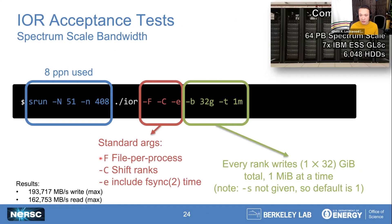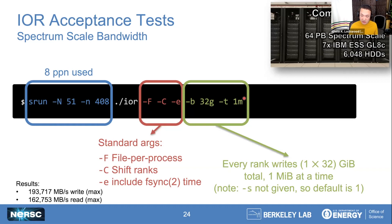Here are some real-life acceptance tests we've done at NERSC. The first is the exact IOR line we ran on our community file system — a Spectrum Scale system. It really is as simple as running IOR with our three magic cache-avoidance commands, then specifying block size and transfer size to govern the geometry of the files we'll be manipulating. That's it. This was criteria sufficient to decide that the performance requirements for this multi-million dollar file system were being met. It doesn't have to be super complicated.